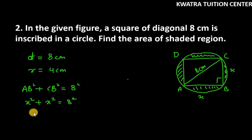x² + x² = 2x² equals... wait, 8 square is there, that means it is 64, not 8. So we have to divide 64 by 2. This will be 32, right? And we have to find the value of x. So x is √32.